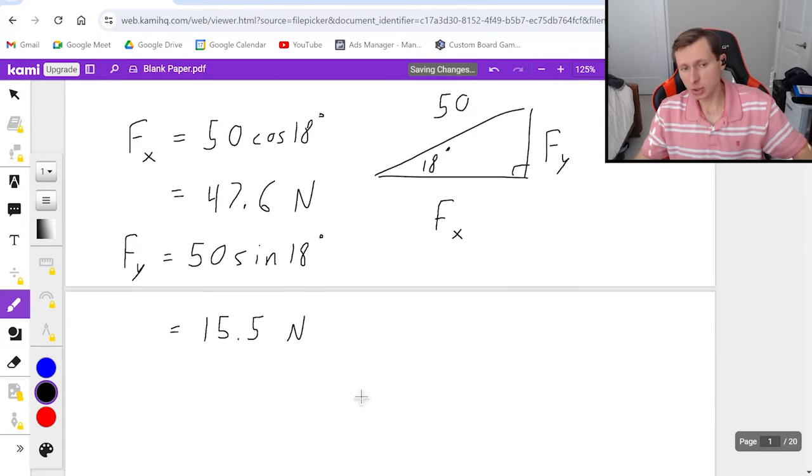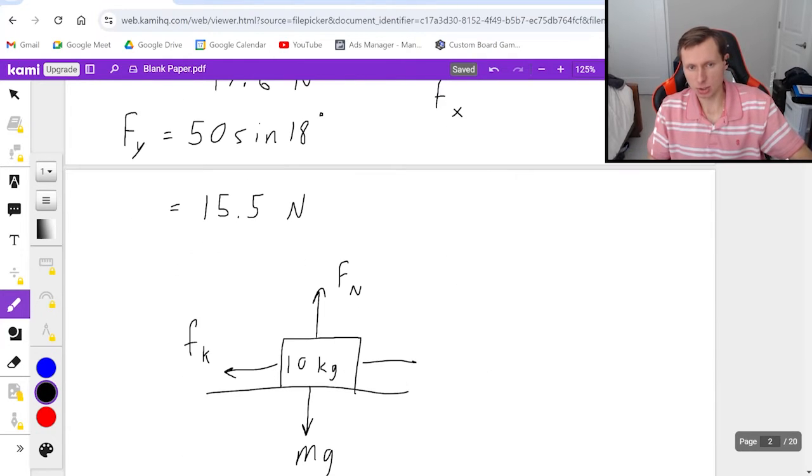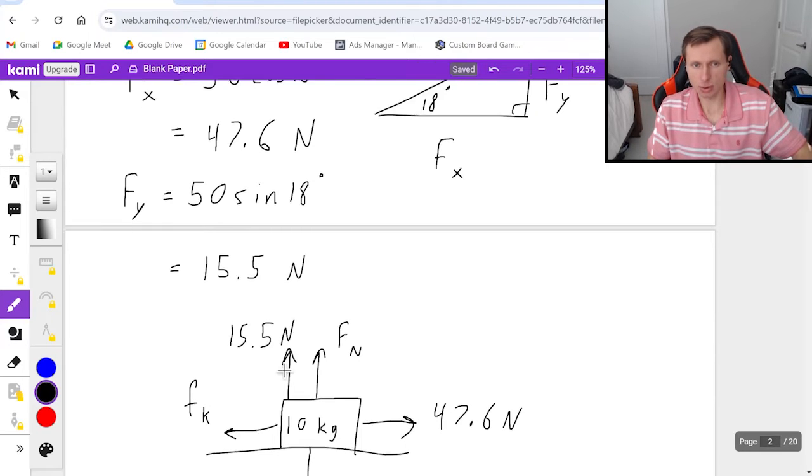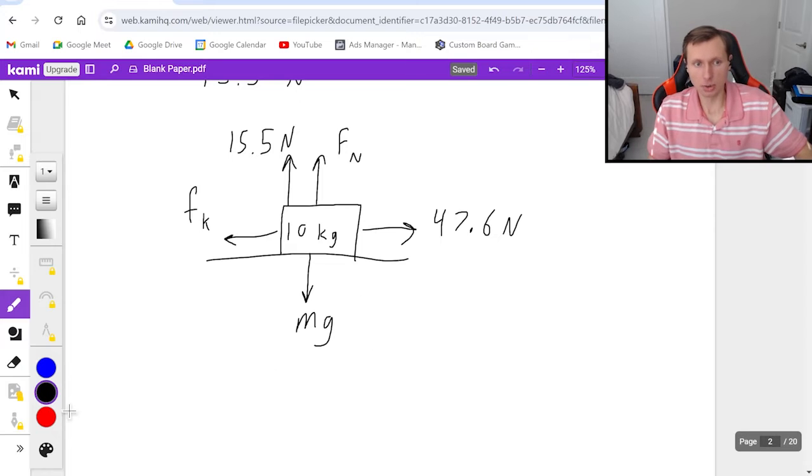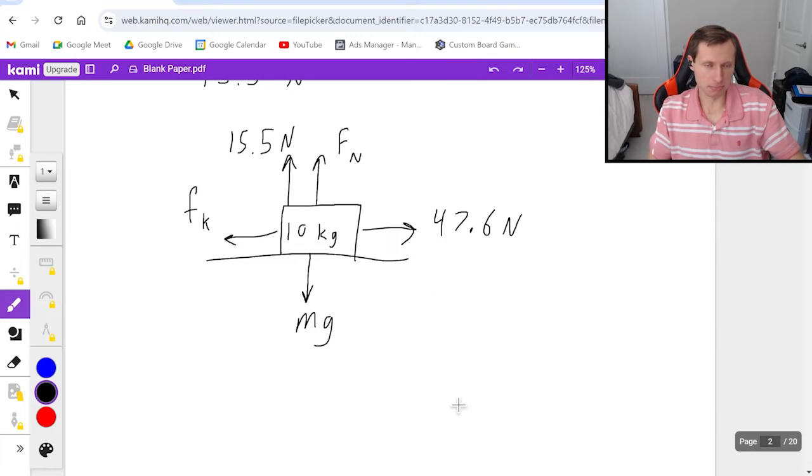Now what I like to do is I like to redraw my diagram now with my component forces on it. So this is still 10 kilograms. This is still normal force. This is still mg going down. And this is still f_k pointing to the left. The only thing that's new is my f_x 47.6 to the right, and then my 15.5 newton f_y pointing up. I have two forces pointing up now, and that's fine. So this is what my new free body diagram is going to look like. Notice the 50 newton force at the diagonal is now gone. It's because I already used that number. I don't need it anymore. I broke it up into x and y components.